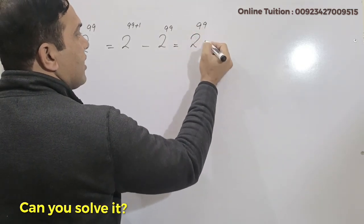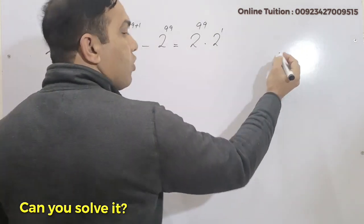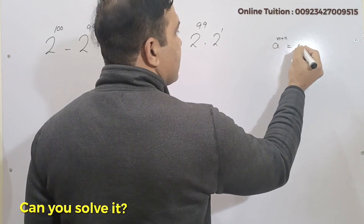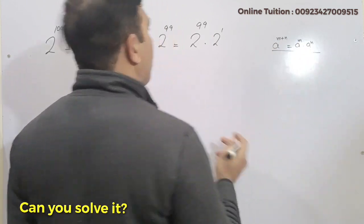2 raised to power 99 times 2 raised to power 1, by the property of logarithm: a raised to power m plus n equals a raised to power m times a raised to power n. This is a property of logarithm.